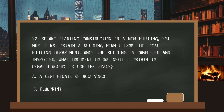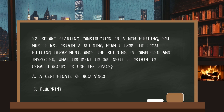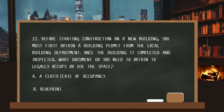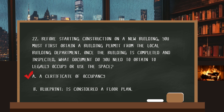Number twenty-two. Before starting construction on a new building, you must first obtain a building permit from the local building department. Once the building is completed and inspected, what document do you need to obtain to legally occupy or use the space? The answer is A: a certificate of occupancy. A blueprint is considered a floor plan.